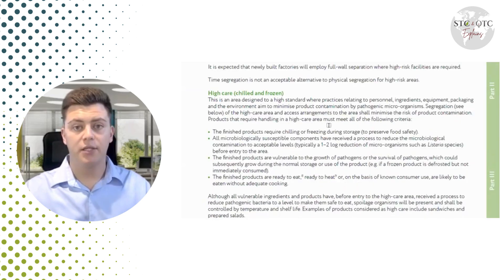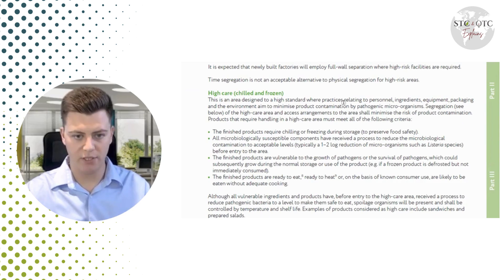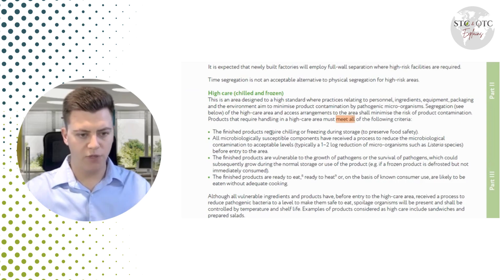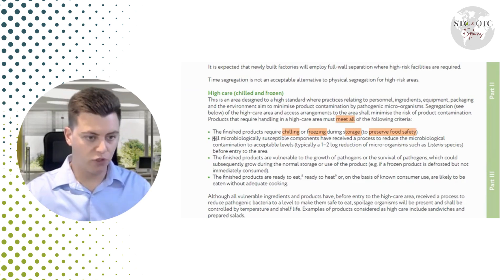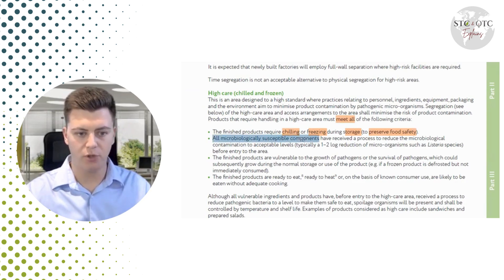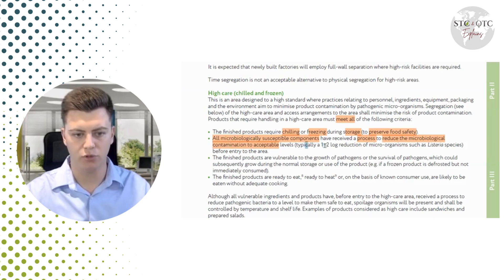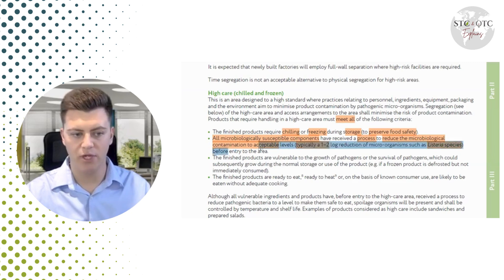High care follows pretty much the same principles as high risk, and we must also meet all of the following criteria. First, finished product requires chilling or freezing during storage to preserve food safety. The main change from high risk is the second bullet point: all microbiologically susceptible components have received a process to reduce microbial contamination to an acceptable level — typically a one to two log reduction of microorganisms such as Listeria species — and that is before entry to the area.